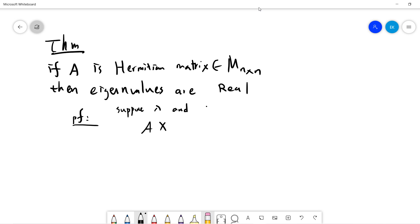The proof is very easy. Suppose lambda and x are eigenvalue and eigenvector of A.